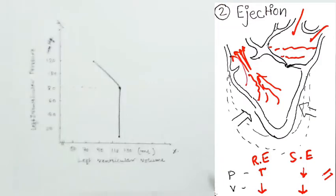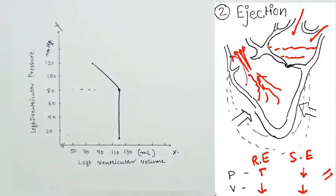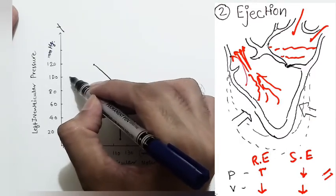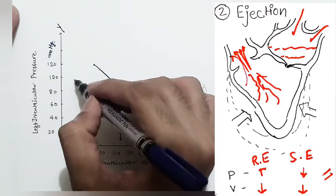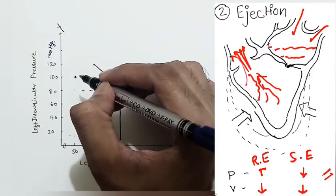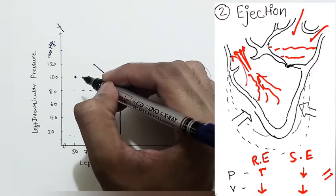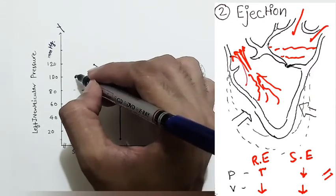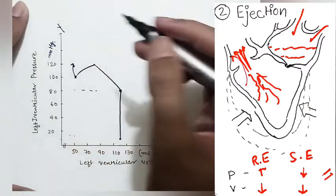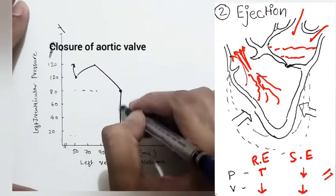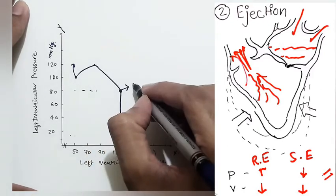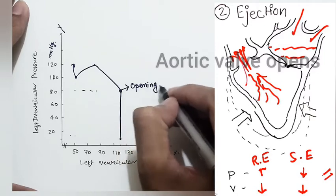After rapid ejection comes the slow ejection phase, where both pressure and volume are decreasing. Pressure drops to approximately 100 mmHg and volume decreases to about 50 ml remaining in the ventricle — meaning about 70 ml has been pumped out. The aortic valve then closes.